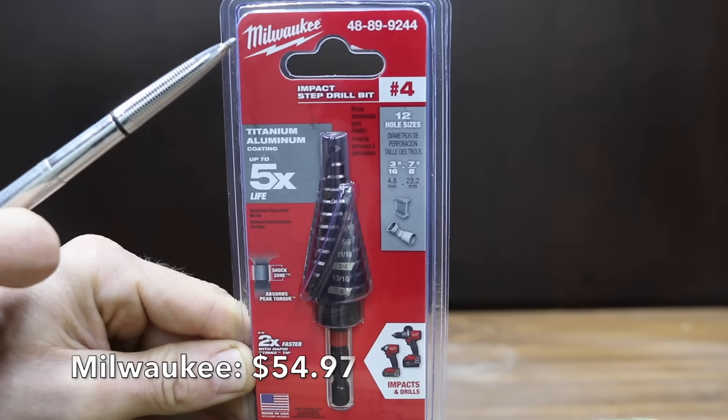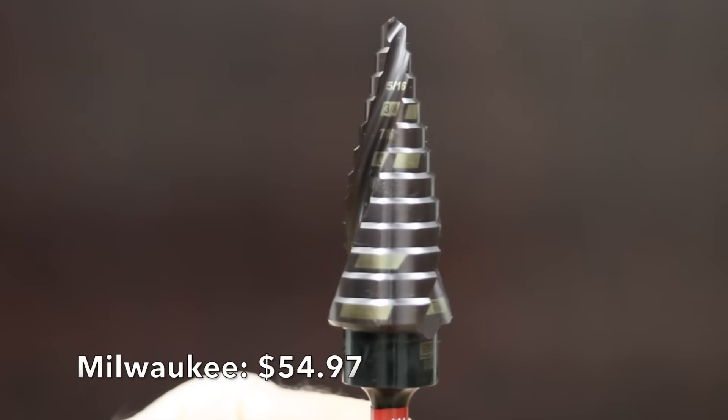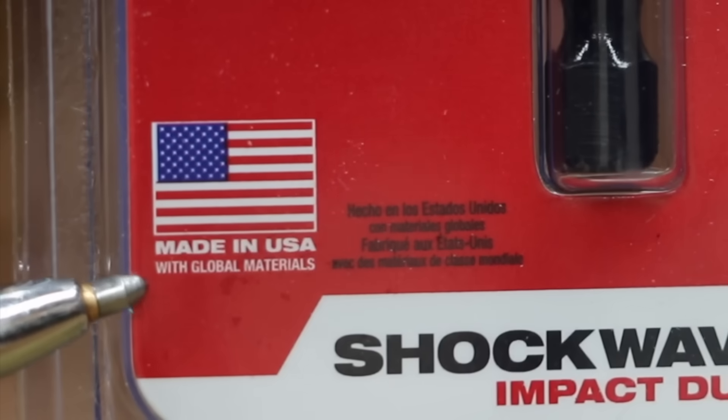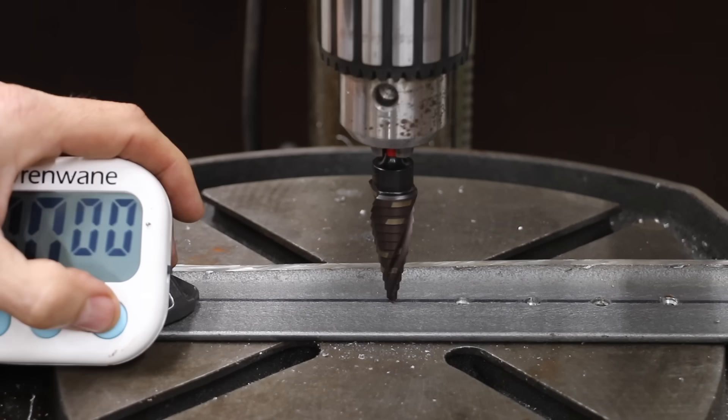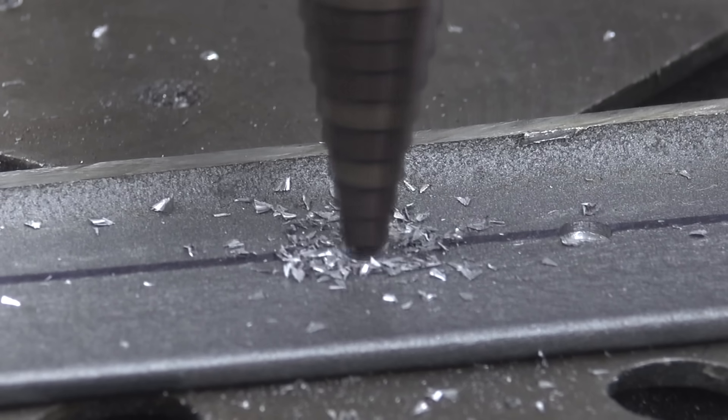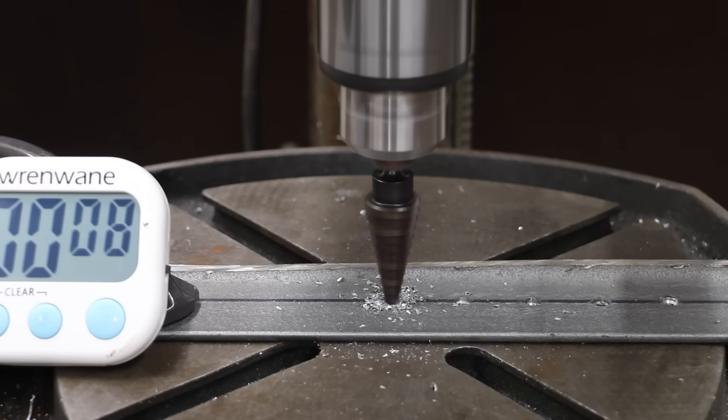At $54.97, the Milwaukee is the most expensive bit we'll be testing. Up to two times faster holes, impact ready. Made in USA with global materials. The Milwaukee did a very impressive job of 10 seconds, tying the Makita, but not enough to beat the eight second DeWalt time.